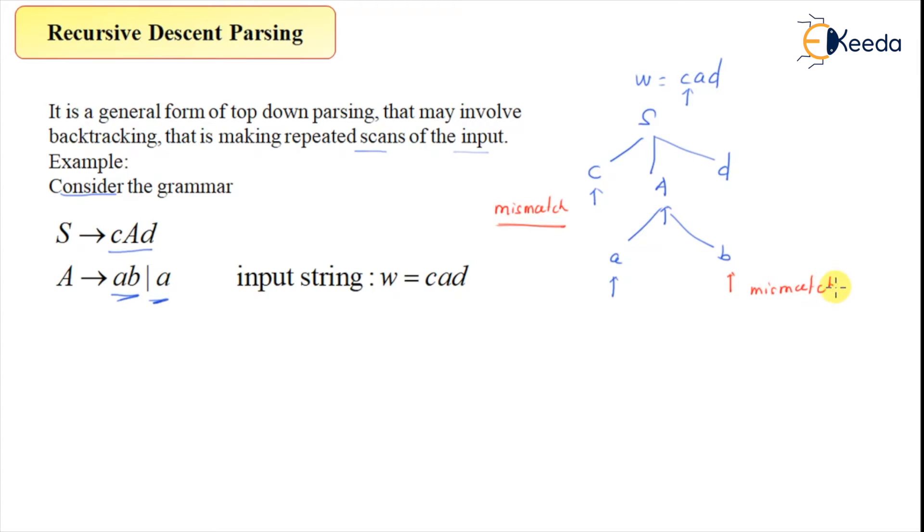The moment mismatch occurs, it will perform backtrack. That may involve the term backtracking. So where will it backtrack? It will go to the same position where it started, CAD was the position. We have already explored the first choice, now we will explore the second choice, which is a. So there is a match: C matches, A matches, and D is also matched.